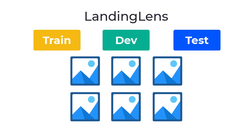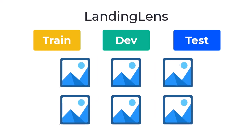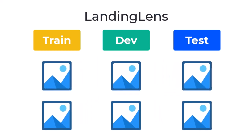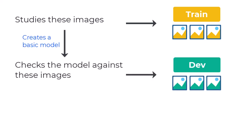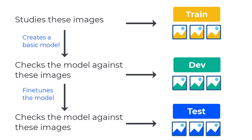In summary, Landing Lens splits your images into different datasets so your model can effectively learn the patterns of your data and prevent overfitting. As a reminder, the Train set is used for teaching your model, the Dev set is used for practicing and fine-tuning, and the Test set measures its ability to make accurate predictions on new, unseen examples.